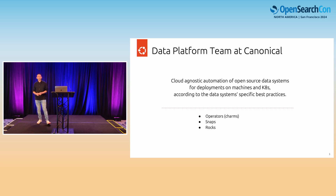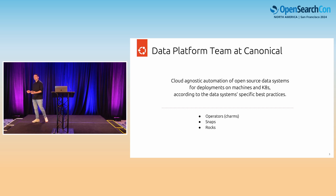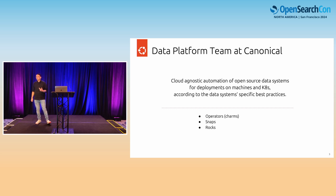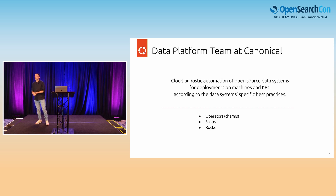The data platform team at Canonical is essentially a group of engineers working on developing cloud-agnostic automations of open source data systems — databases such as OpenSearch, MongoDB, MySQL, Postgres, and so on — according to data systems best practices. We effectively implement the best practices of operations of these data systems into reusable, bundled code. We produce three types of artifacts: operators, which is what I just described; Snaps, which are self-contained packages installable on Linux; and Rocks, which are essentially OCI images.